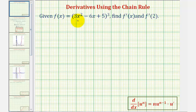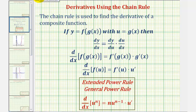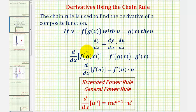Before we find this derivative, let's review the chain rule. The chain rule is used to find the derivative of a composite function, where if we have y equals f of g of x, with u equal to the inner function g of x. To find the derivative of a composite function, we find the derivative of the outer function, and then multiply by the derivative of the inner function.